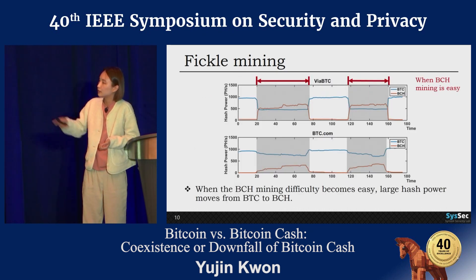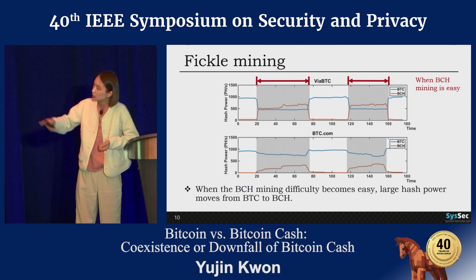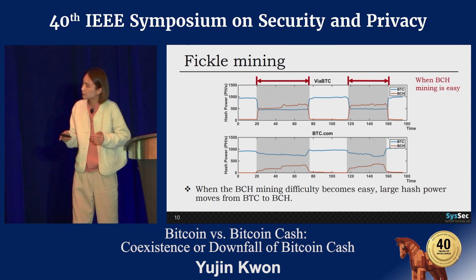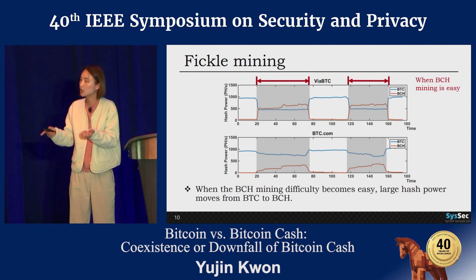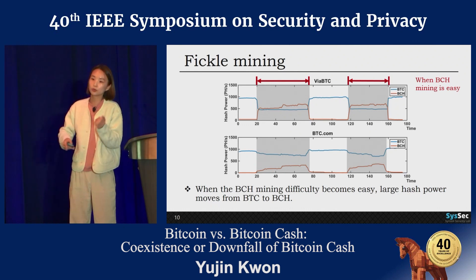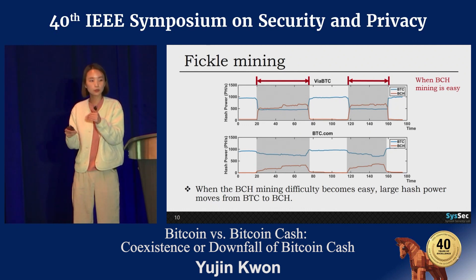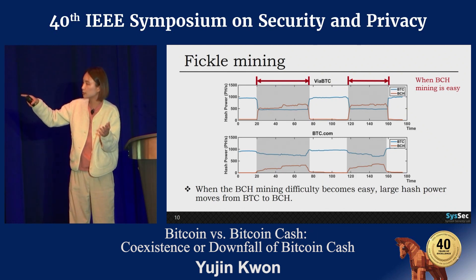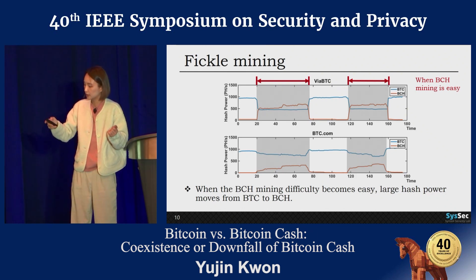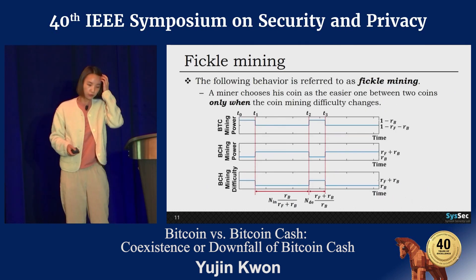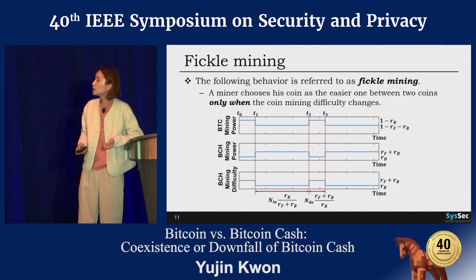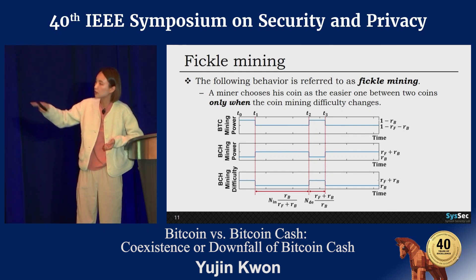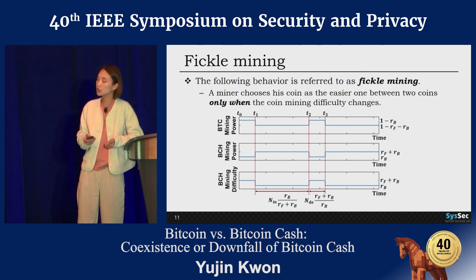Look at this figure. At the start of the gray zone, the BCH mining difficulty decreased, so large hash power moves from BTC to BCH. At the end of the gray zone, the BCH mining difficulty increased again, so large hash power moves back from BCH to BTC. To capture this behavior, we formally defined 'fickle mining.' A fickle miner chooses the easier coin between the two only when the coin mining difficulty changes.